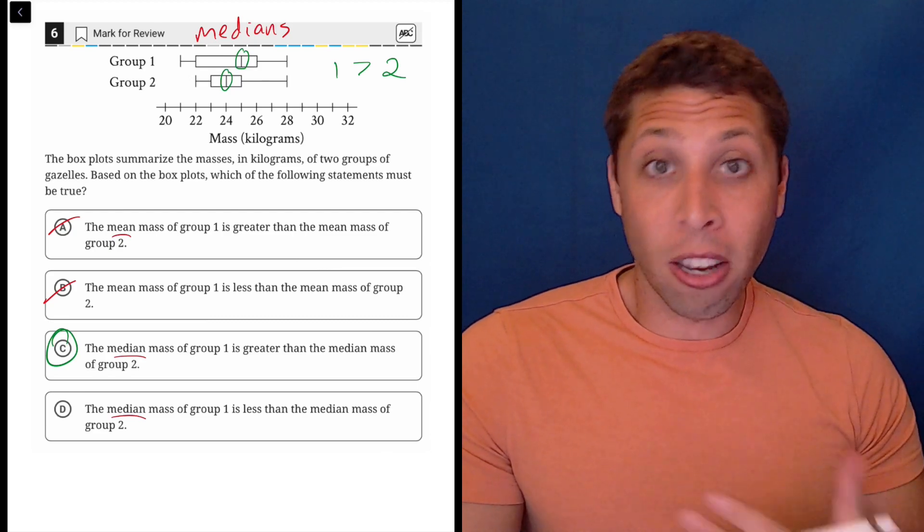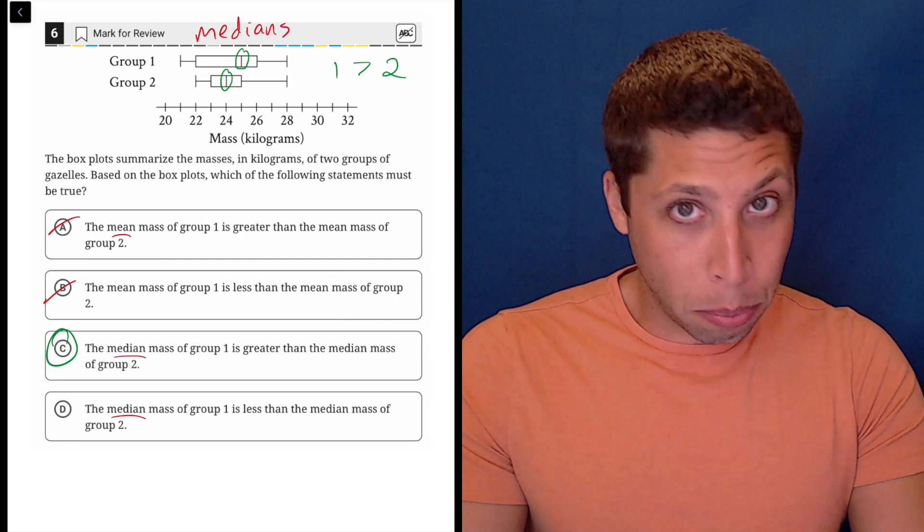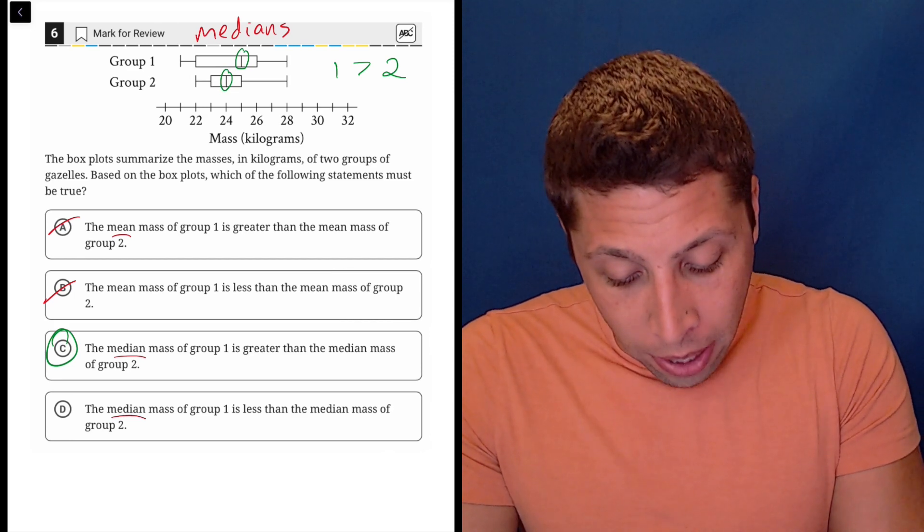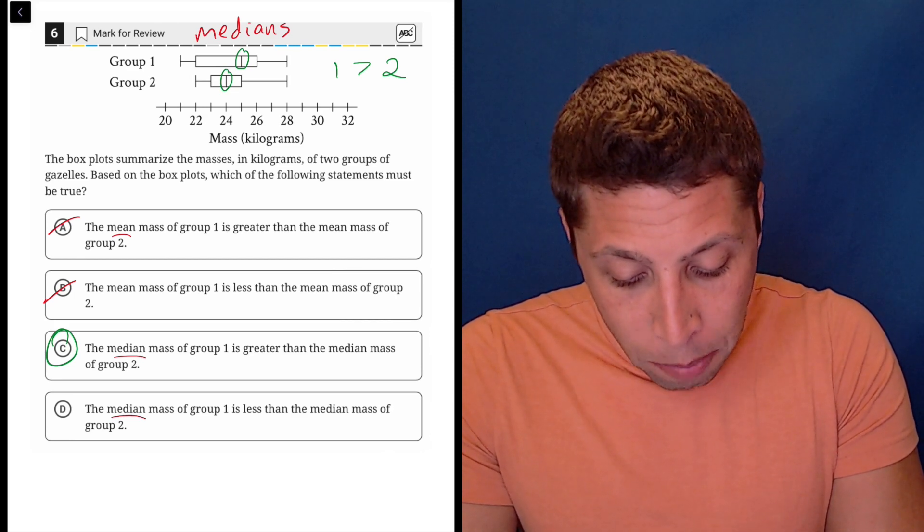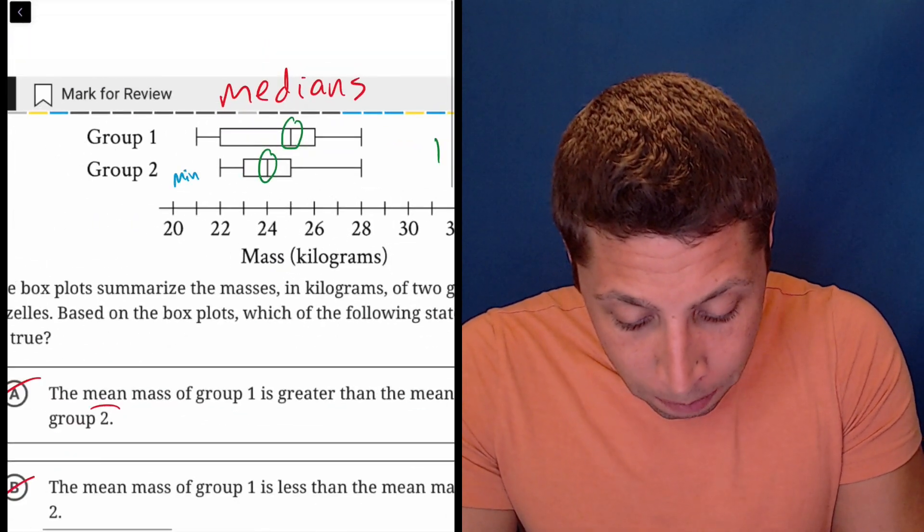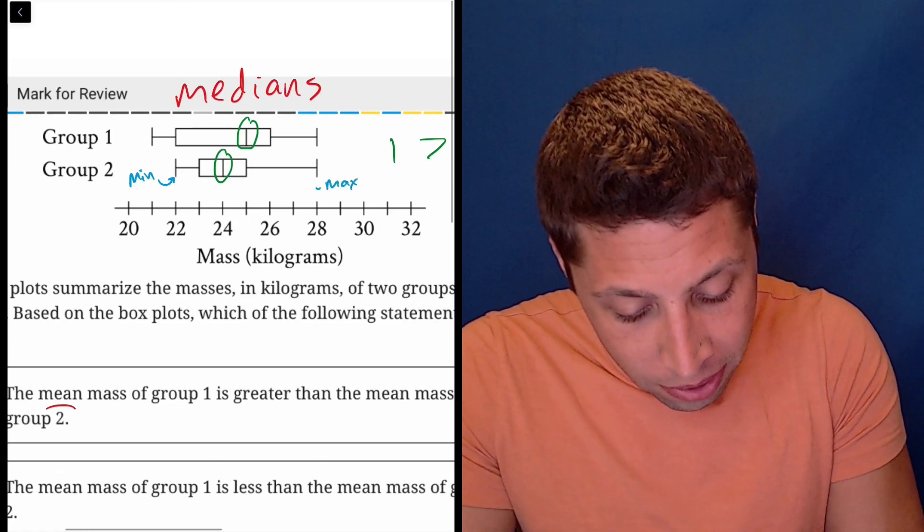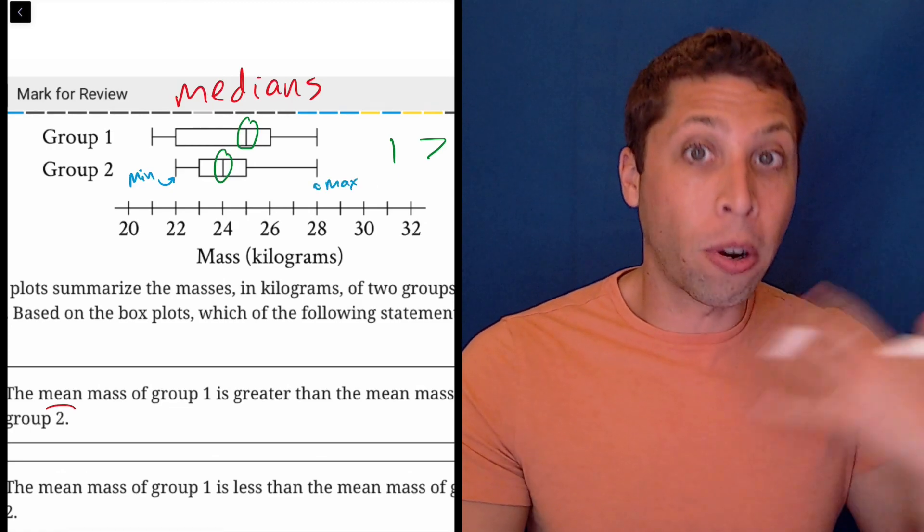So yes, box plots are more complicated. There are other ideas we need to think about. At the ends here of each of these box plots, let me zoom in, we've got the minimum, which is this little whisker sometimes it's called. The maximum of the set is right here. Those are hopefully also very intuitive.